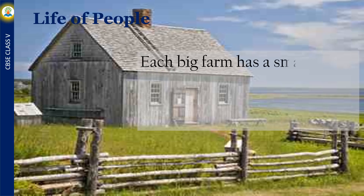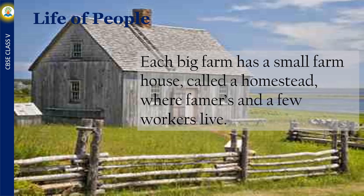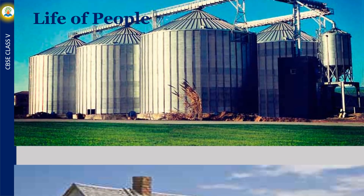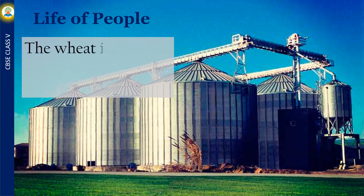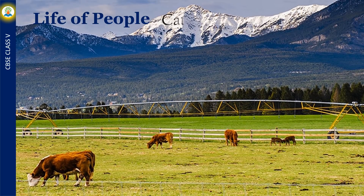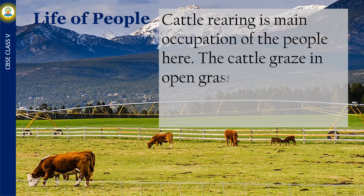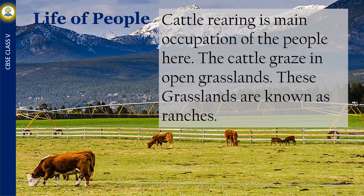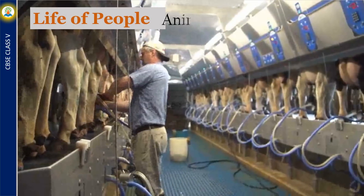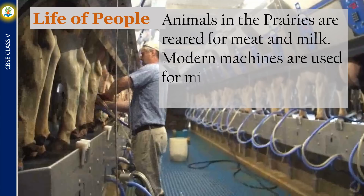Each big farm has a small farmhouse called a homestead, where farmers and a few workers live. The wheat is stored in big vessels called silos or elevators. Cattle rearing is also a main occupation of the people here. The cattle graze in open grasslands known as ranches. Animals are reared for meat and milk, and modern machines are used for milking the cattle in dairy farms.